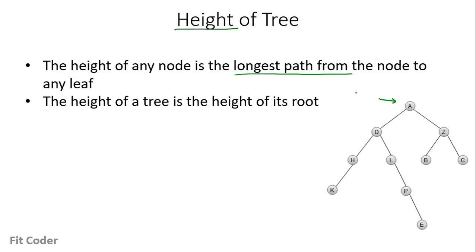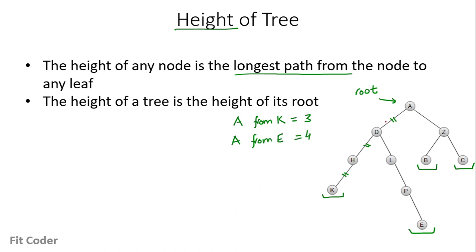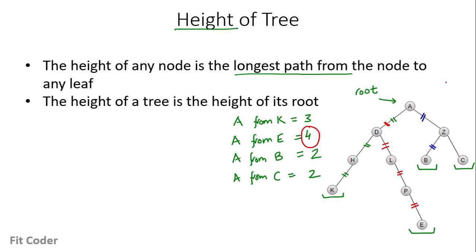In this example, A is the root node and the leaf nodes are K, E, B, and C. The distance of A from K is 3 — there are three edges: AD, DH, and HK. The distance of A from E is 4, from B is 2, and from C is also 2. So the maximum distance is from E, meaning the height of A is 4.